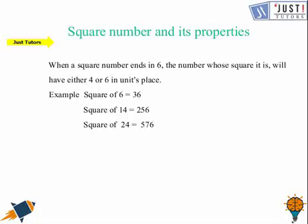Now let us see this property. When a square number ends in 6, the number whose square it is will have either 4 or 6 at the unit place.